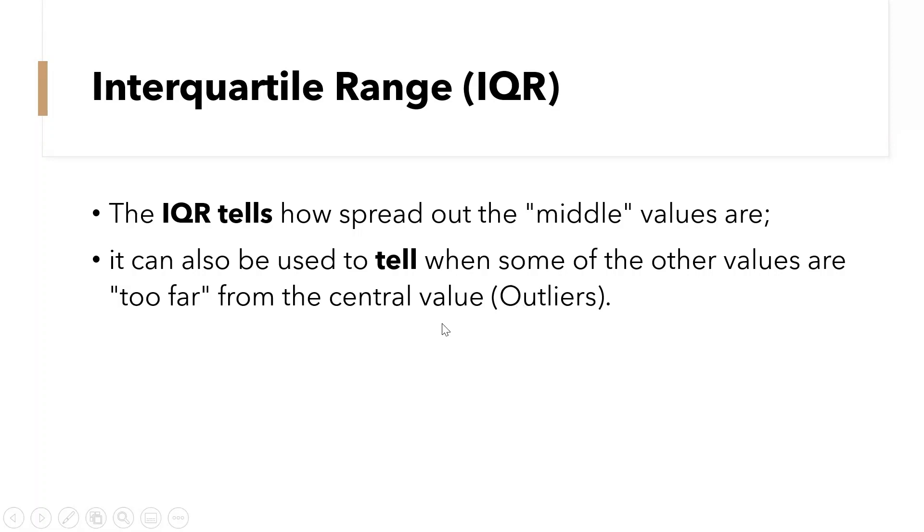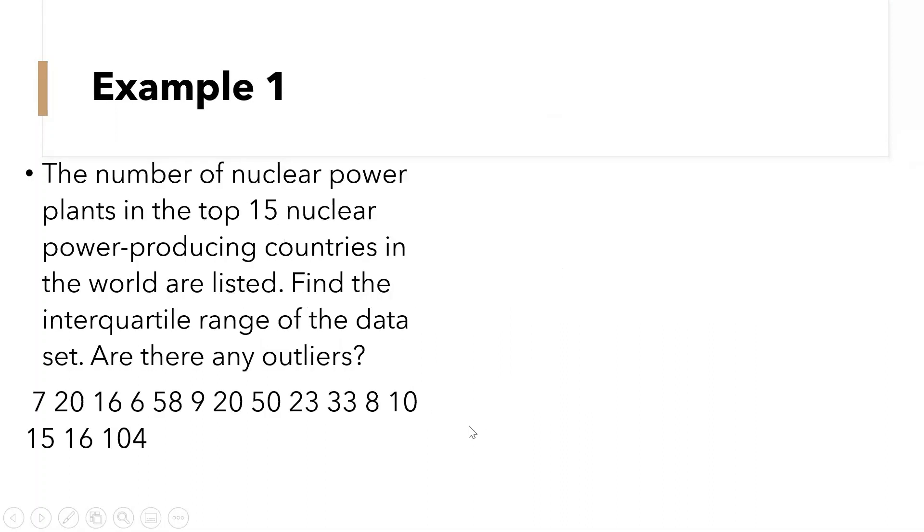So the formula for finding the interquartile range is Q3 minus Q1. We're just going to find the difference of the quartile 3 and the quartile 1. So let us have this example number one.